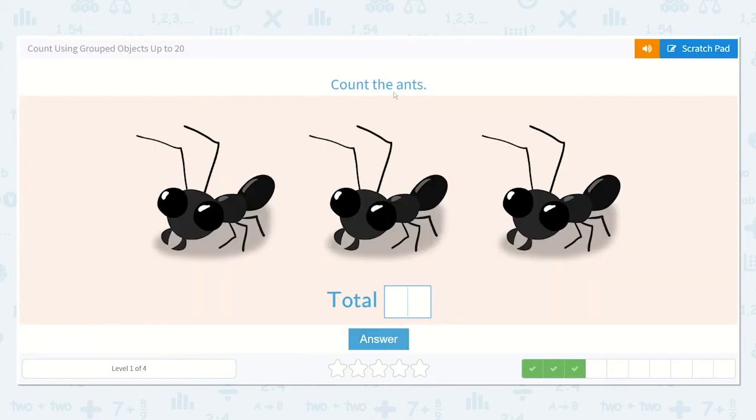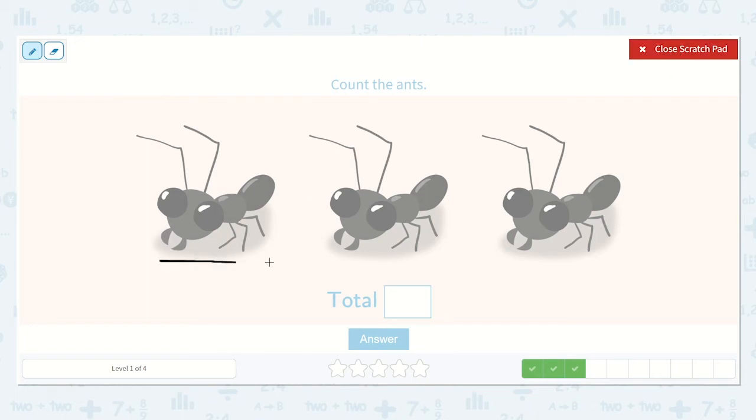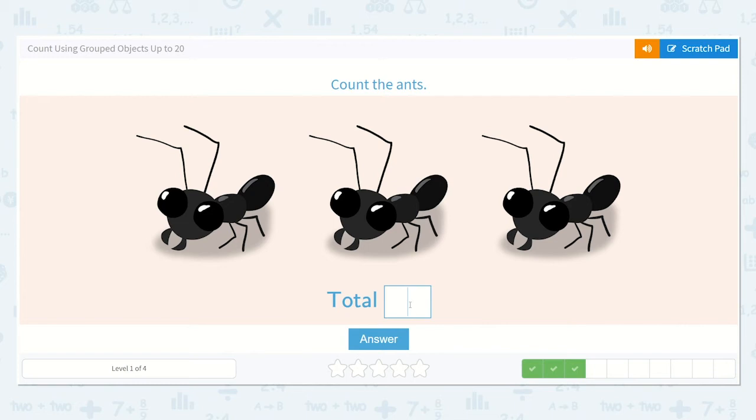Alright, count the ants. One, two, three. I see three ants so I will write three in the box. Let's type a three and click answer.